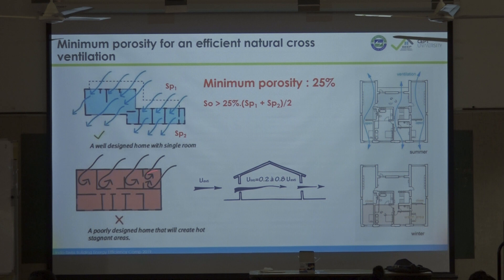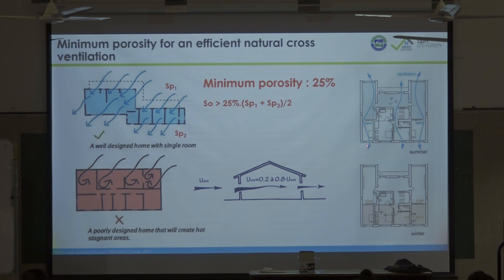For instance, this building doesn't work properly. Each time you design a building you have to check if you have openings on both sides. This apartment example shows that the air can go through openings on both sides, and in winter when it's cold you close everything and have a warmer space.